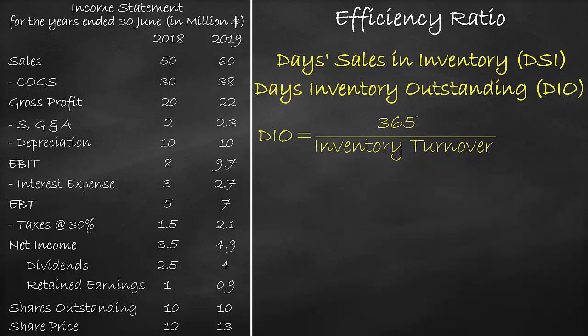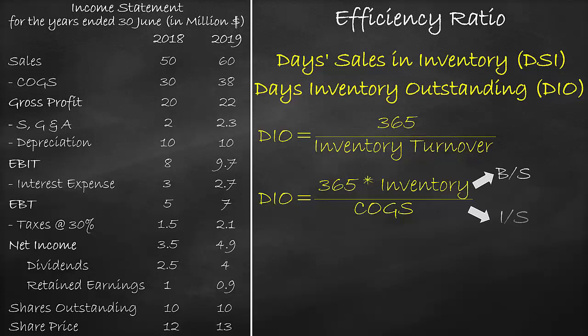Or, we can rewrite the days inventory outstanding formula as 365 times inventory divided by the cost of goods sold. We get the inventory from the balance sheet and we get the cost of goods sold from the income statement. Please note that the income statement is a flow account, which means that it is calculated over a year, while the balance sheet is a stock account, which is calculated at a certain point of time.